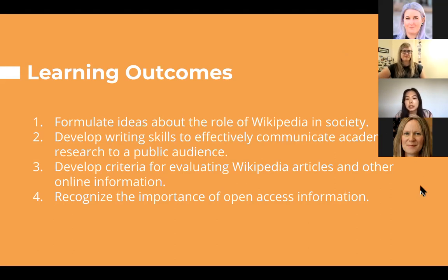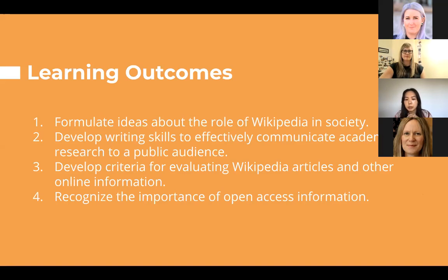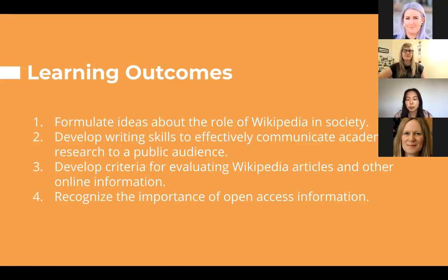The second learning outcome is developing writing skills to effectively communicate academic research to a public audience. A lot of students are familiar with essay writing, but not necessarily how to communicate their ideas effectively to an audience that isn't their peers in higher education or their instructors. Writing a Wikipedia article is a great way to learn a different type of writing. The third learning outcome is developing criteria for evaluating Wikipedia articles and other online information. As librarians, we get asked to teach a lot about information literacy and how to evaluate information — whether found online or in print materials.